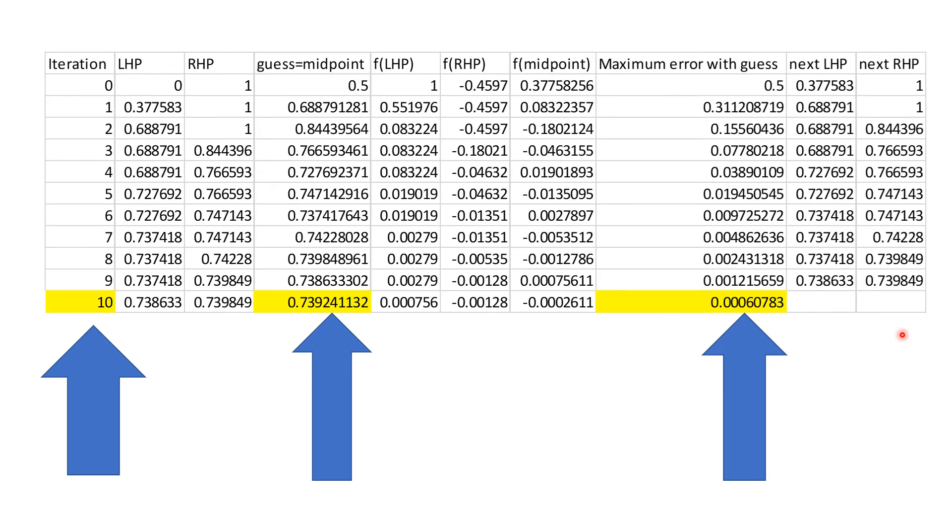And we went through the steps, and you can see that there were ten iterations that were required. And you can see that my maximum error did, in those ten iterations, fall below 0.001. And so that is good. And we also know that our guess at that time, that the solution to the problem is accurate at least to three decimal places, is 0.739.